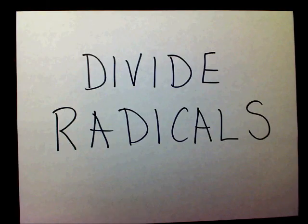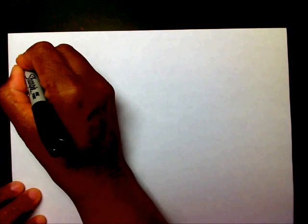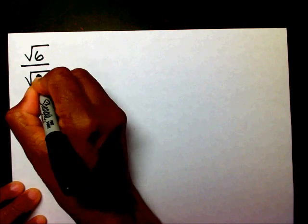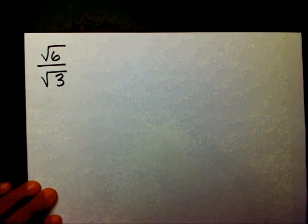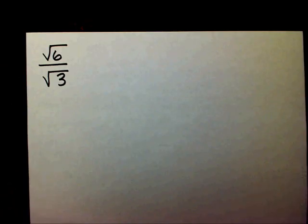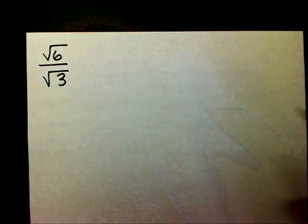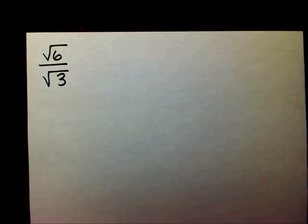Today we're going to divide radicals. We have radical 6 divided by radical 3. When you divide radical 6 by radical 3, you want to do something called rationalize the denominator.